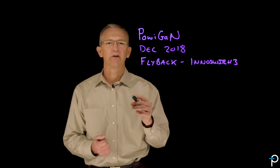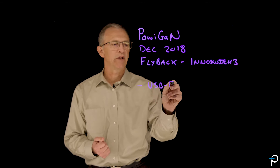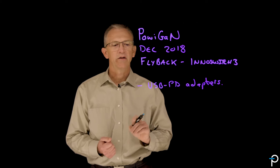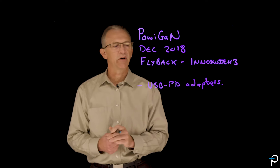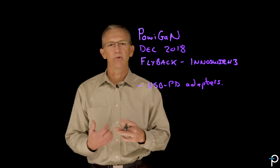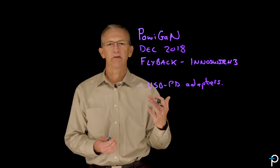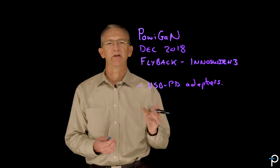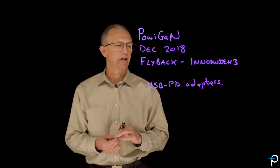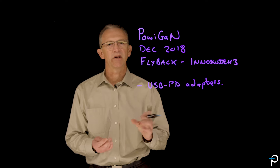The primary application that we've found the most commercial success in is USB PD adapters. This particular application, especially in the aftermarket, is extraordinarily competitive, and there are big advantages if you can make a smaller, more compact adapter — they're just more attractive. You can fit multiple ports of USB PD into a single enclosure that previously, using silicon, you'd have to use a much bigger enclosure. Overall for the USB PD adapter, gallium nitride has become de rigueur.